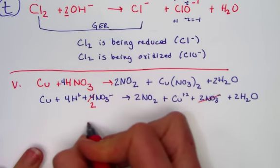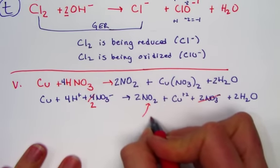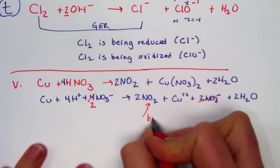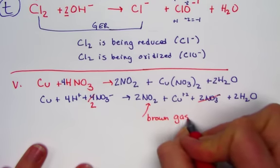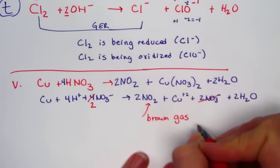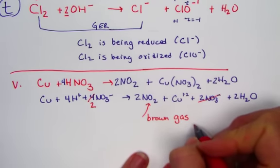And knowing that, we were asked for observations. This is the nitrogen dioxide would be the brown heavy gas that would come out. So, we would definitely see evidence of change as the brown gas bubbles out of the top of the test tube.